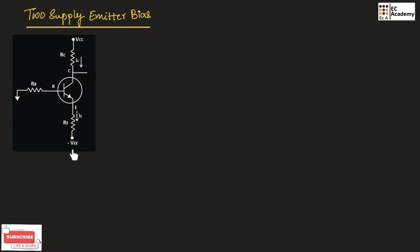In two-supply emitter bias, the positive supply is connected across the collector terminal. Similarly, a negative supply will be connected at the emitter terminal. Hence, it is known as two-supply emitter bias. When the negative supply is connected here, the positive of that supply will be connected to ground, which will form a loop at the base terminal.